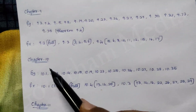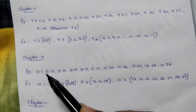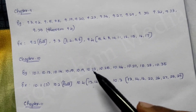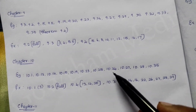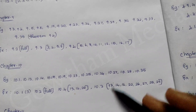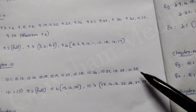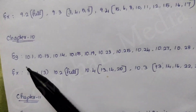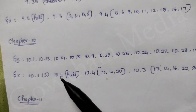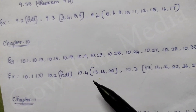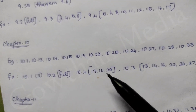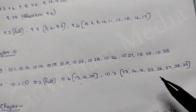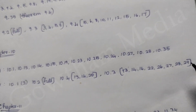Chapter 10. Examples: 10.1, 10.13, 10.14, 10.15, 10.19, 10.23, 10.25, 10.24, 10.27, 10.28, 10.35. Exercise: 10.1 — 3rd sum. 10.2 — full. 10.4 — 13th, 14th, 20th. 10.3 — 13th, 14th, 16th, 22nd, 26th, 27th, 28th, 29th.